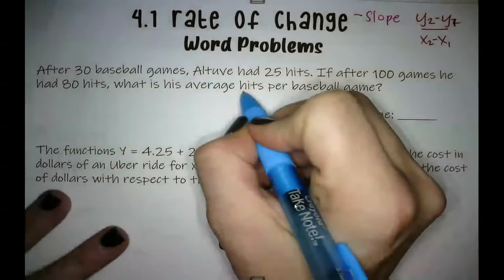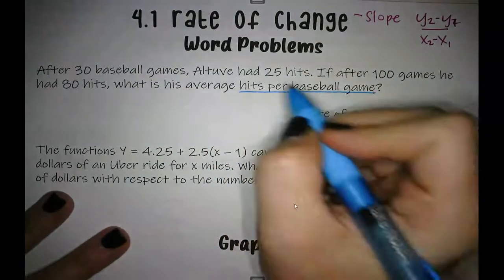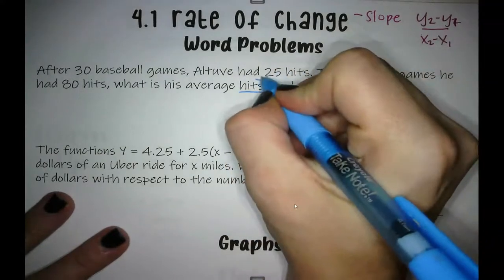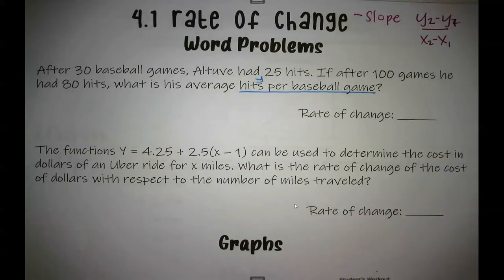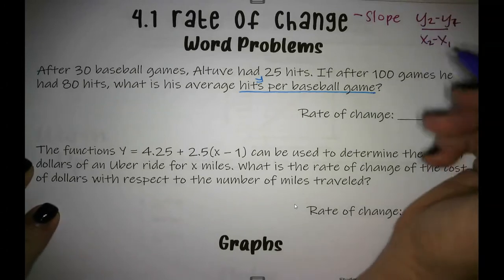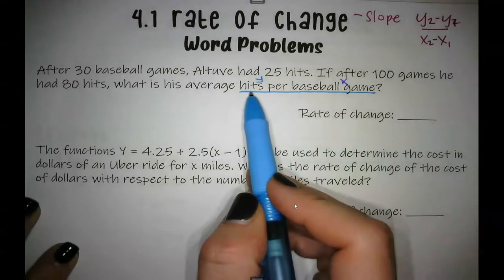So we want to know hits per baseball game. That means our hits is going to be our Y values, because in our slope formula, we have Y's over X's. So our baseball games would be our X. So then I'm going to go find my Y1 and Y2.